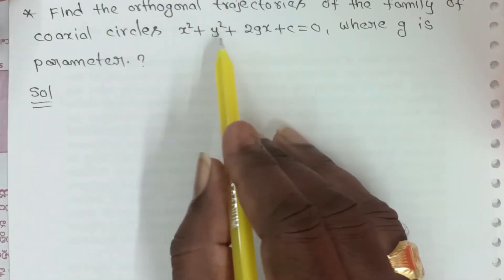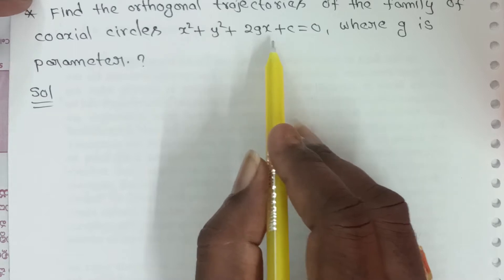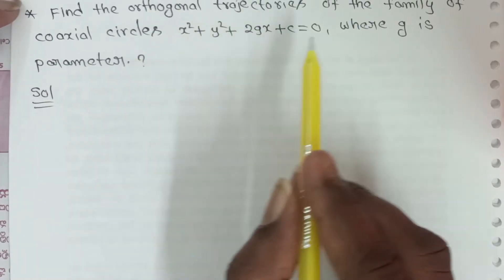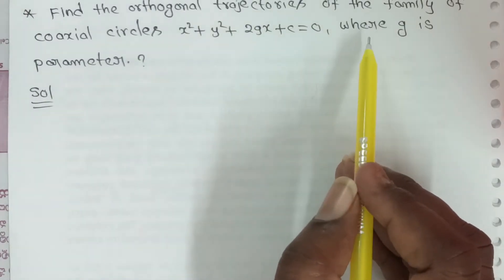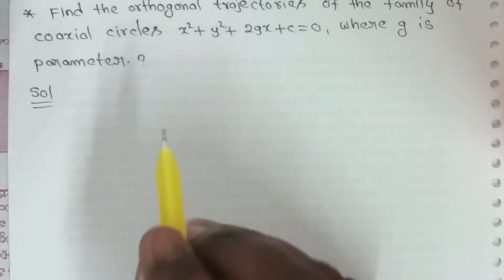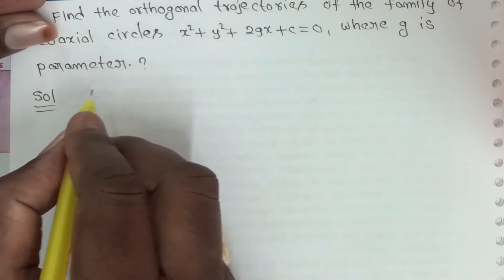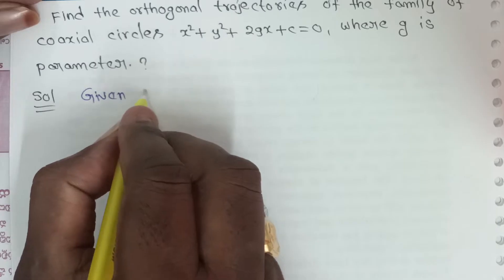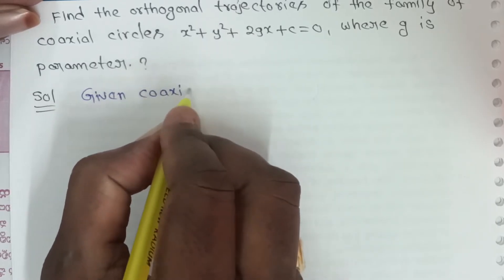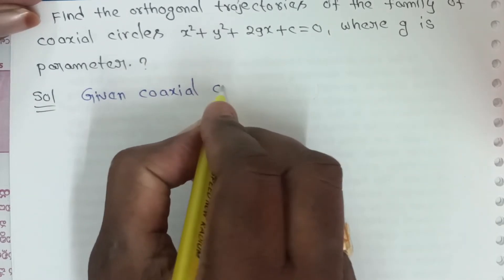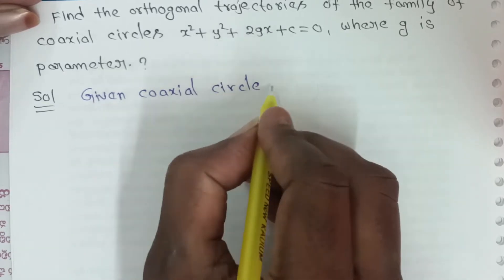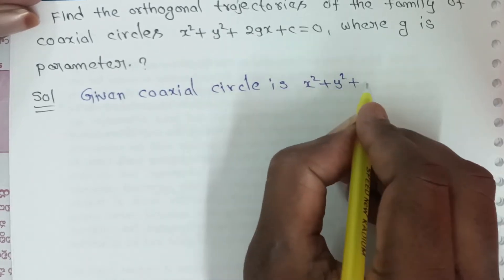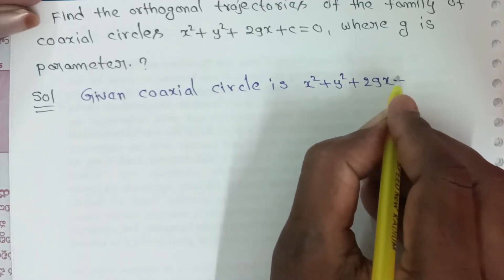Here the parameter is g. So from equation x² + y² + 2gx + c = 0, the parameter term is to be eliminated. The number of parameters equals the number of derivatives. This parameter equals one differentiation. The given coaxial circle is x² + y² + 2gx + c = 0.